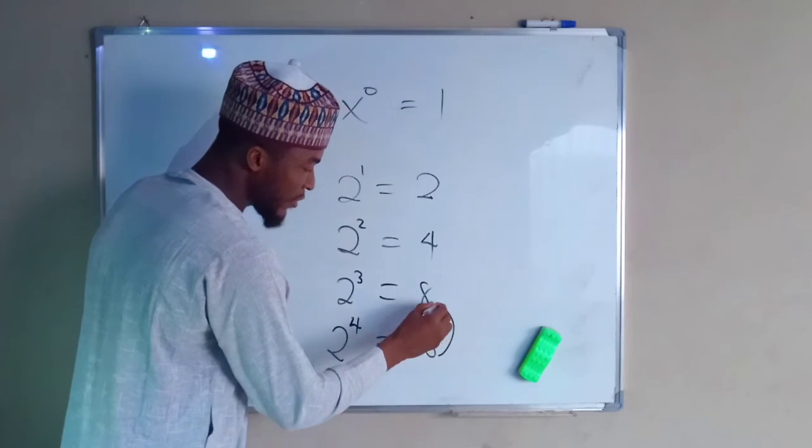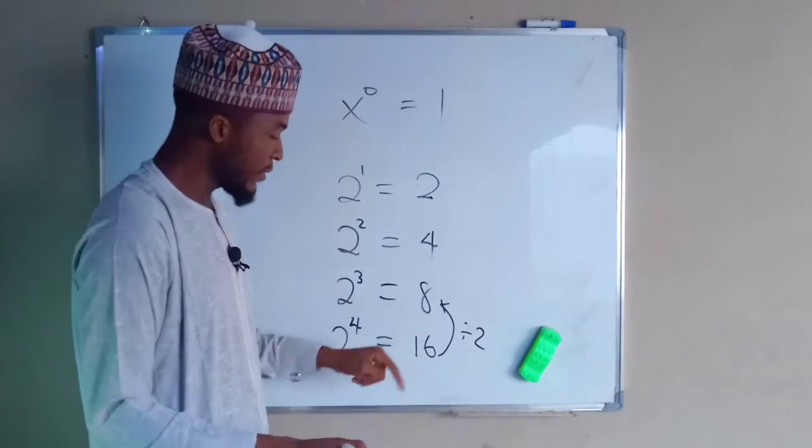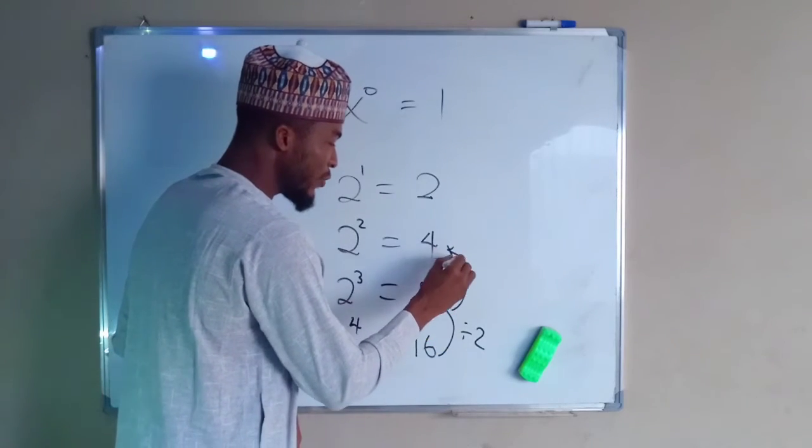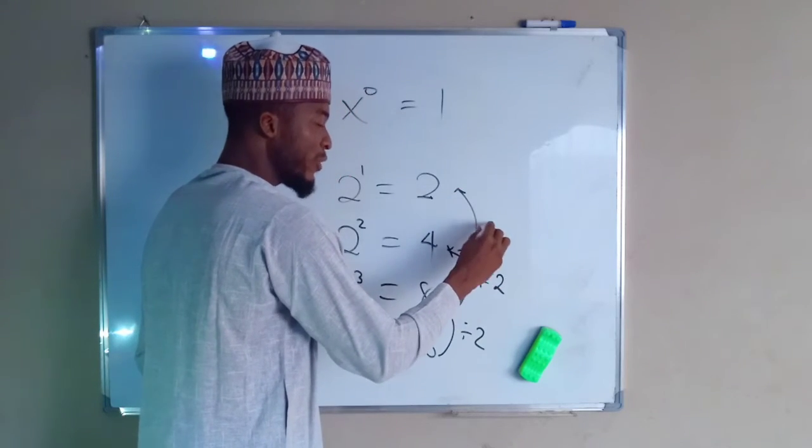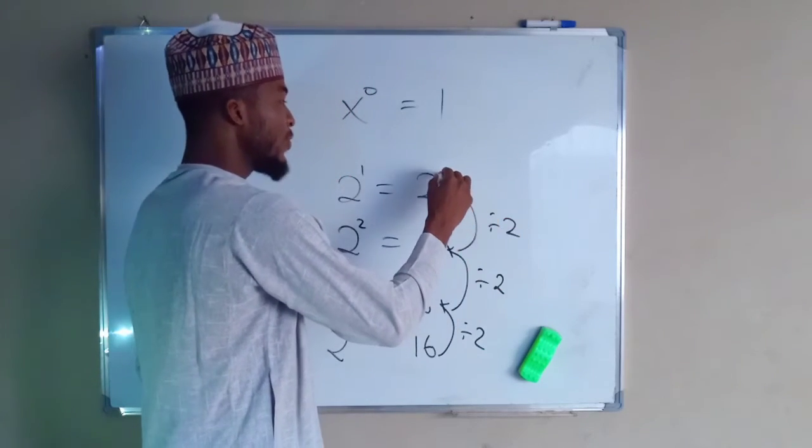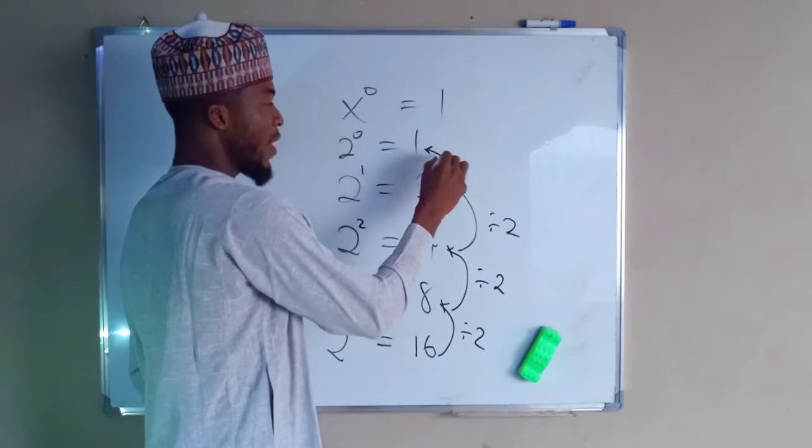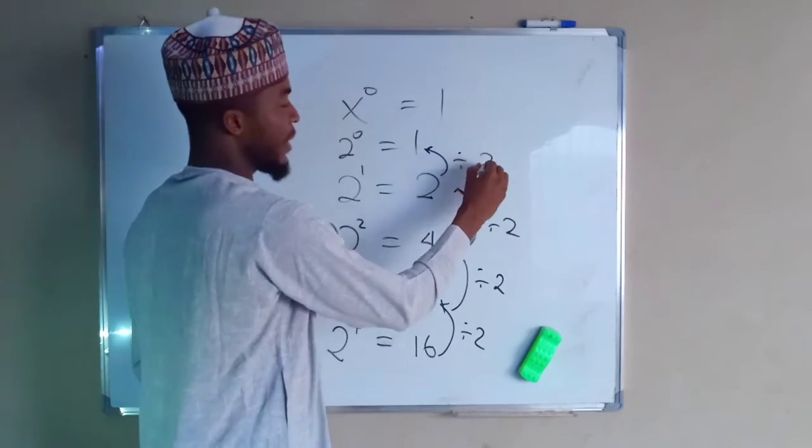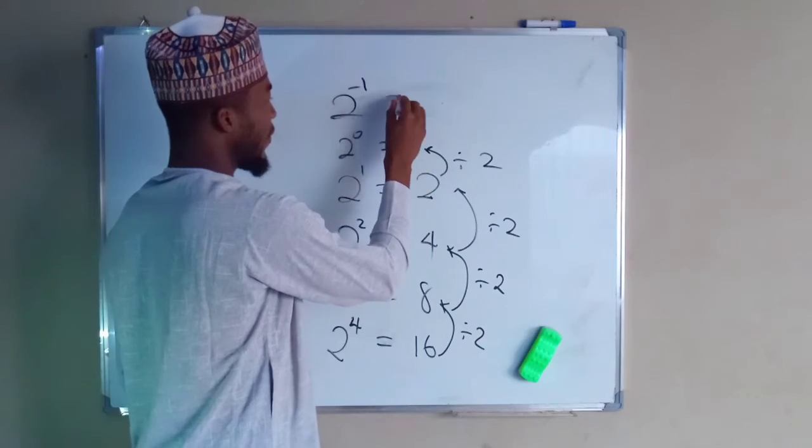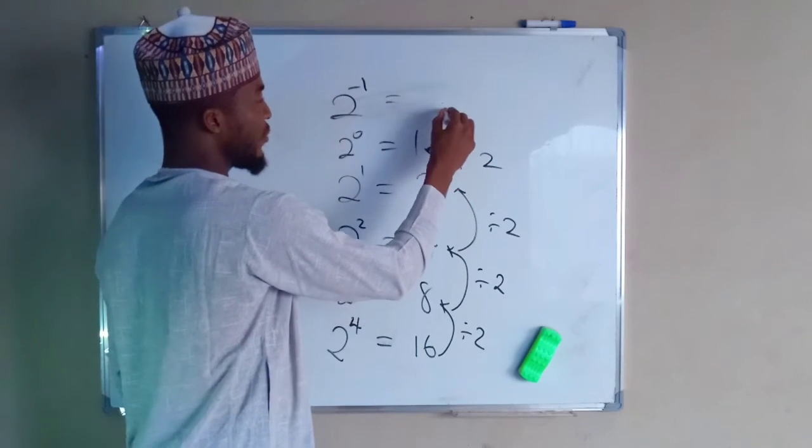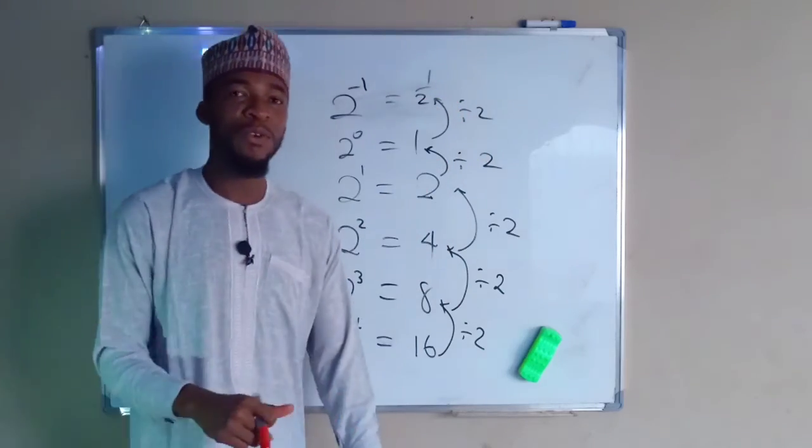Well, what about if we divide this number by 2? If you divide 16 by 2, you are going to obtain 8. 8 divided by 2, you are going to obtain 4. 4 divided by 2, you are going to obtain 2. If you divide this number by 2 again, 2 divided by 2 is going to give us 1. To find out, then you divide this number by 2. If you divide by 2, you are going to obtain 1 over 2, and so on and so forth.